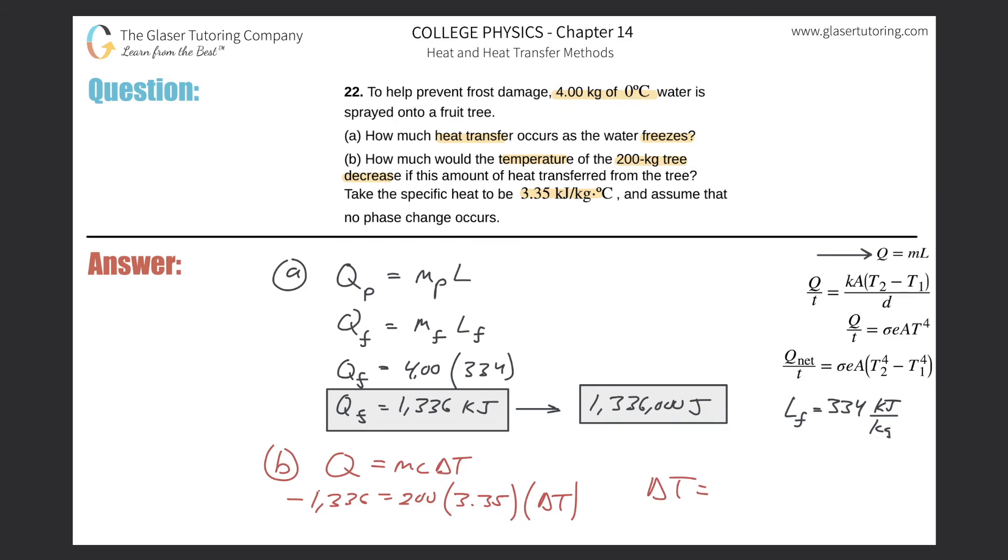So let's just do that. Divide by 200 multiplied by 3.35, and we get a value about 2, 1.99. So 1.99, and it's minus, which means it goes down, and that's in degrees Celsius. So it's going to decrease by about 2 degrees.